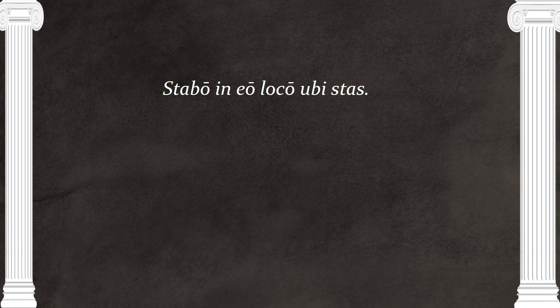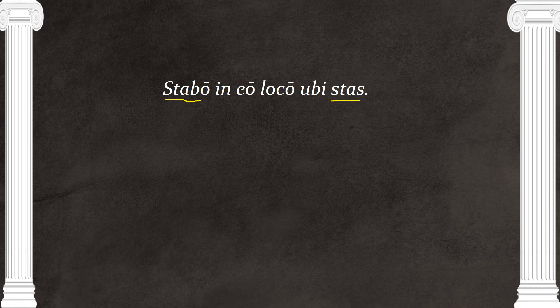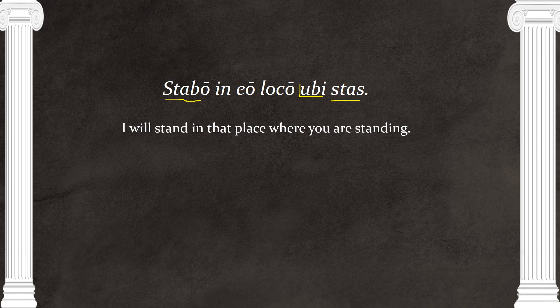You may be asked on a quiz how many clauses are in a sentence. You answer that by counting the number of verbs. We have 'stabbo' and 'stas' — two verbs usually means there are two clauses. To find where the subordinate clause begins, you look for one of the words we just talked about. For example: 'I will stand in that place where you are standing.' In English: 'I will stand' is one clause, and 'you are standing' is the other verb — that's where your subordinate clause begins.